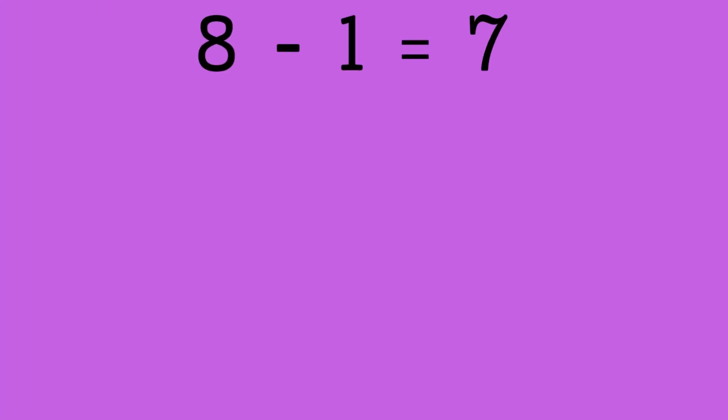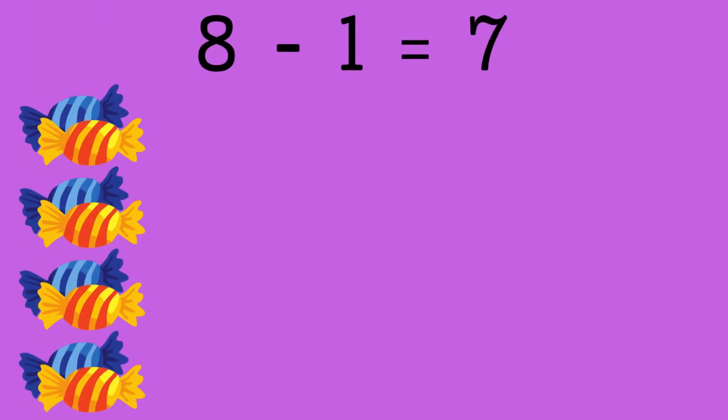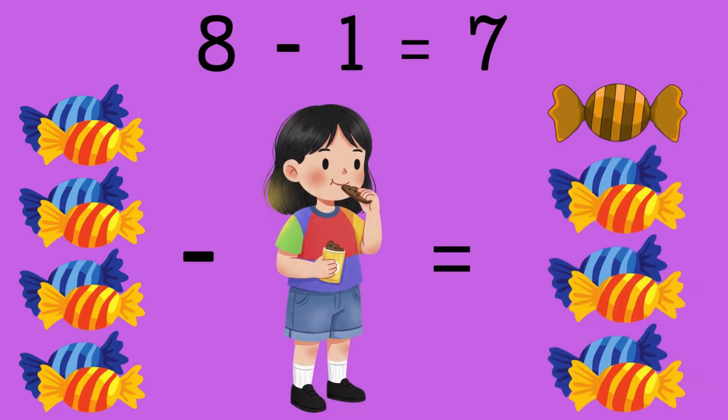8 minus 1 equals 7. Let's say you have 8 toffees and you ate 1 toffee. How many toffees left? Correct, 7 toffees.